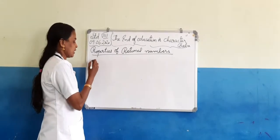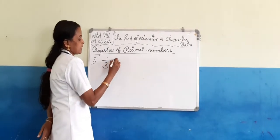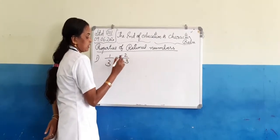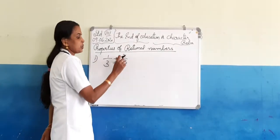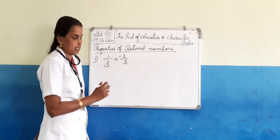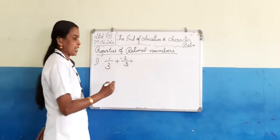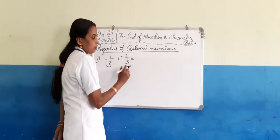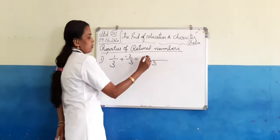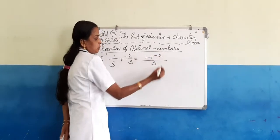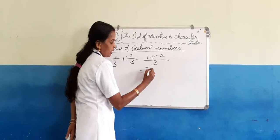Now let us consider one example. Look at the board: 1 by 3 plus negative 2 by 3. 1 by 3 is a rational number, and negative 2 by 3 is also a rational number. Find the sum of these two rational numbers. Here the denominators are the same, so write the common denominator and add the numerators: 1 plus negative 2.